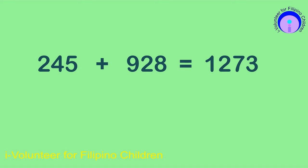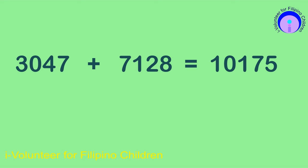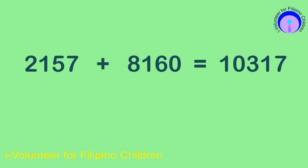245 plus 928 is equal to 1,273. 3,047 plus 7,128 is equal to 10,175. 2,157 plus 8,160 is equal to 10,317.